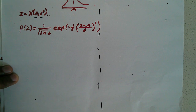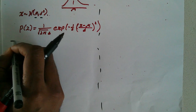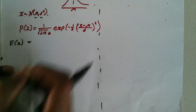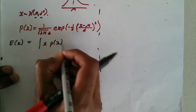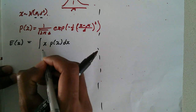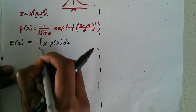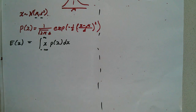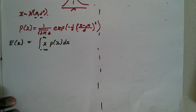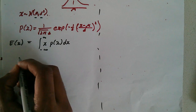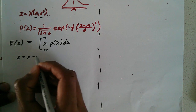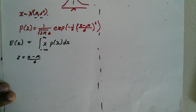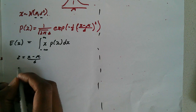To get the expectation, E[X] is simply the integral of x times p(x) dx, and the limits are quite important — it's going to be between negative infinity to infinity. Now before I get started, let me do a substitution: let z equal x minus mu over sigma.